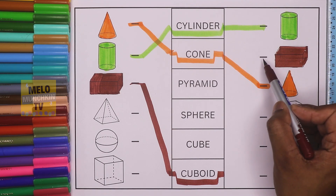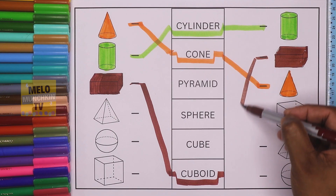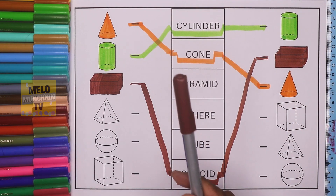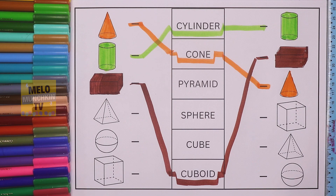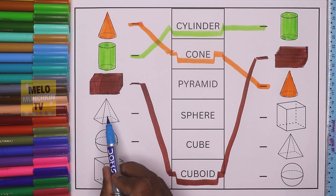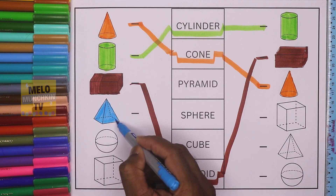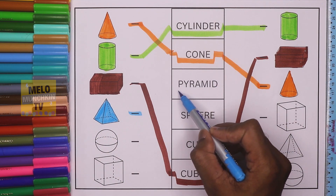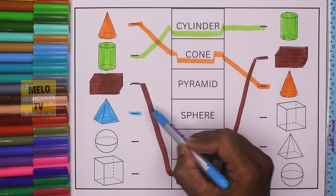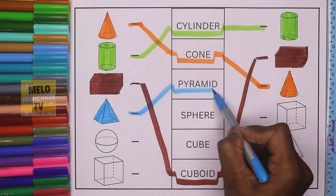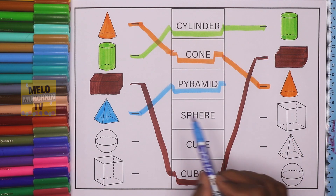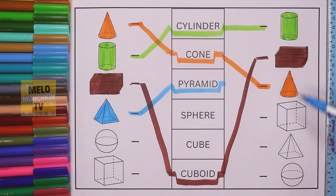Next, I'll take blue color to color this shape called pyramid. This is pyramid. It is written here — P, Y, R, A, M, I, D — pyramid. Then I need to find it from the right-hand side. This is cube and this one is pyramid. I'll join it like this and color it in blue.